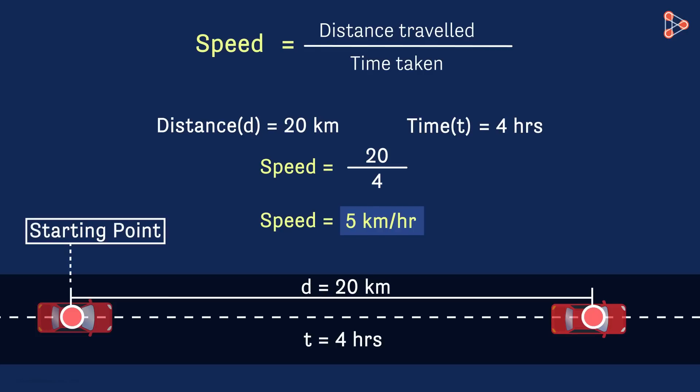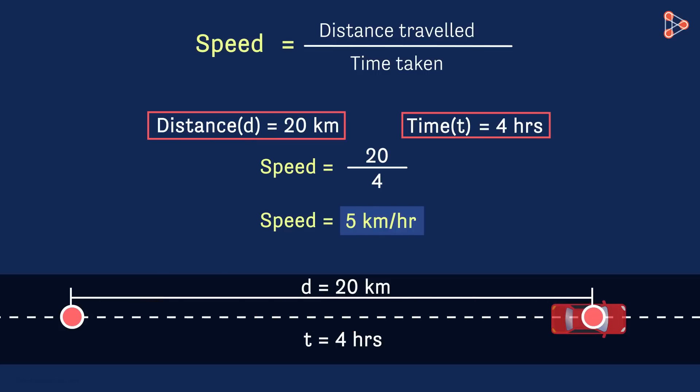What if this was not the starting point of the car? Well, we still cannot say whether the speed was constant or not. Because maybe the car was slow in the first half of the journey and then sped up in the second half. The given data does not imply in any way that the car will cover 5 kilometers in every hour.